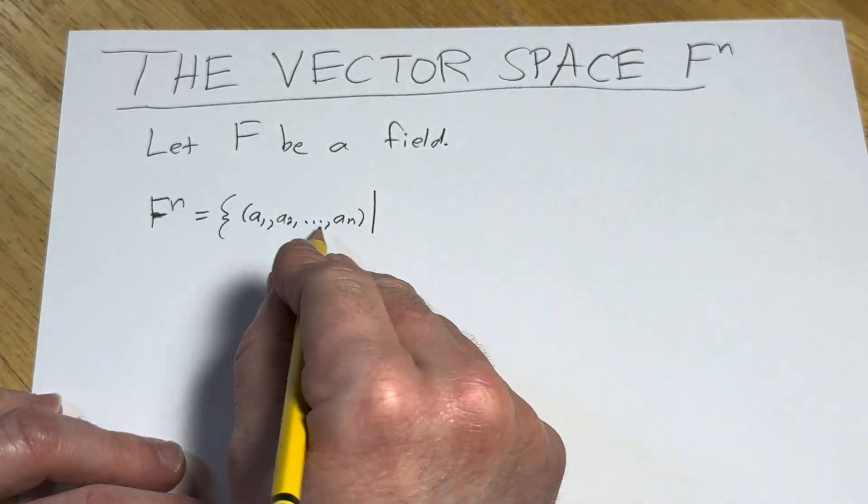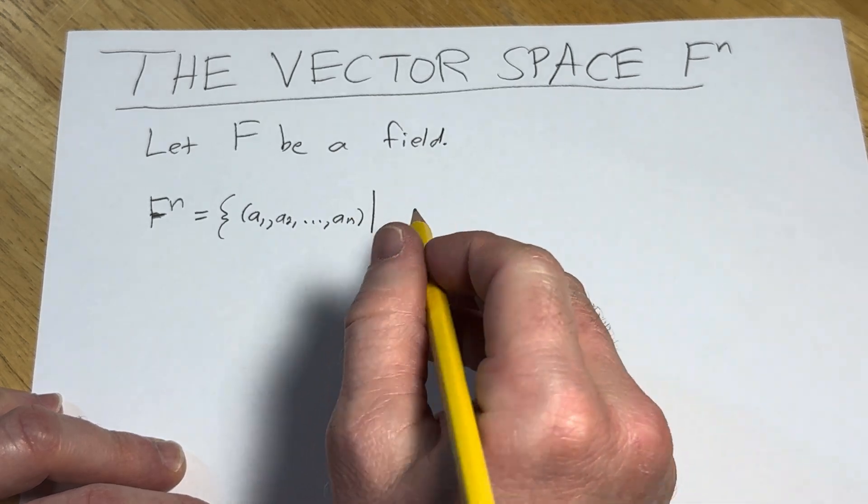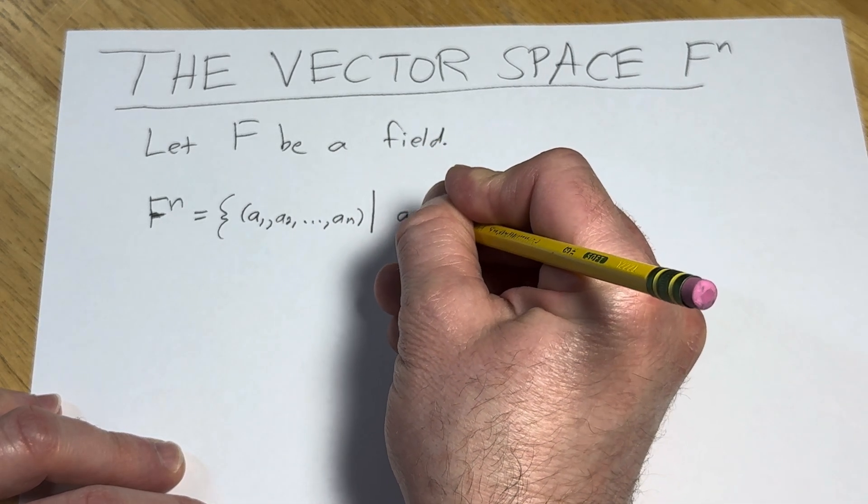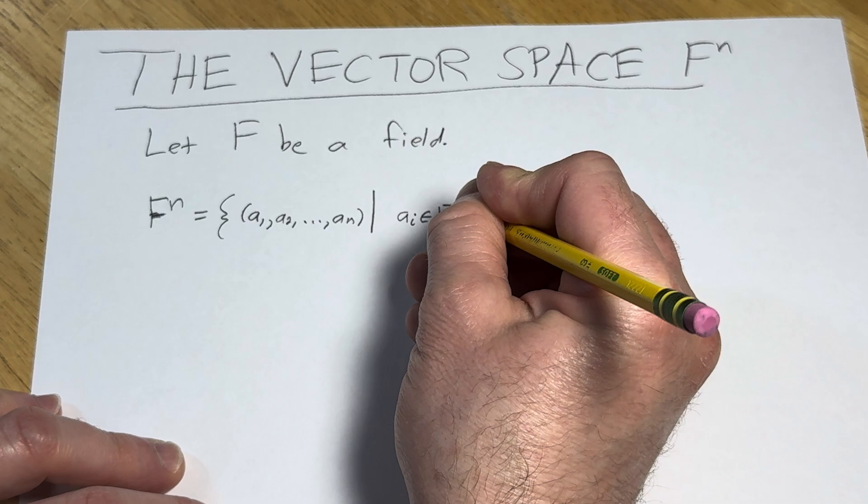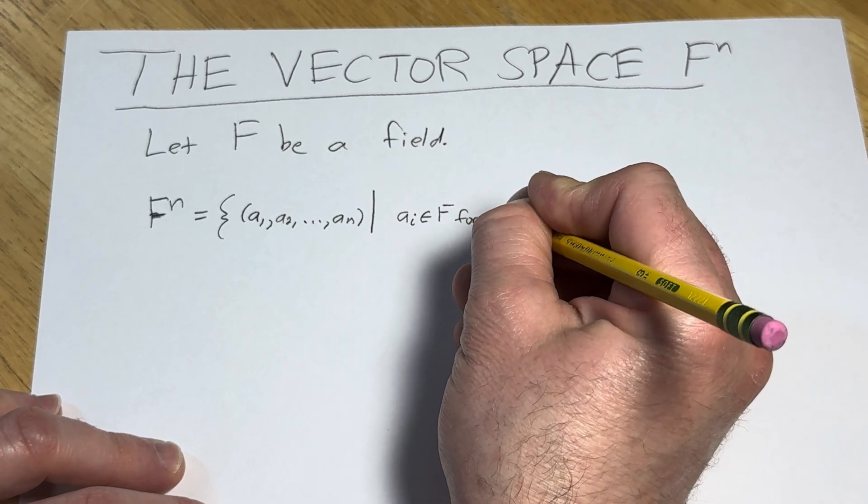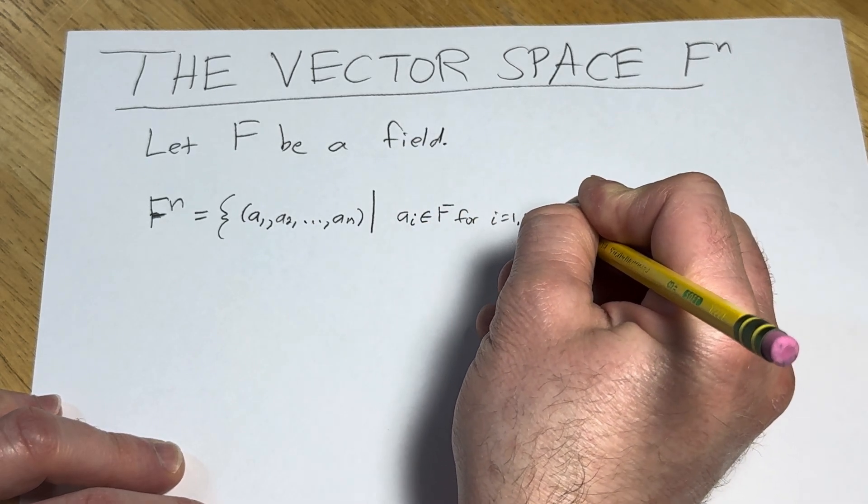such that each of these is an element in F. So a_i, or a sub i, is in F for i equals 1 to n.